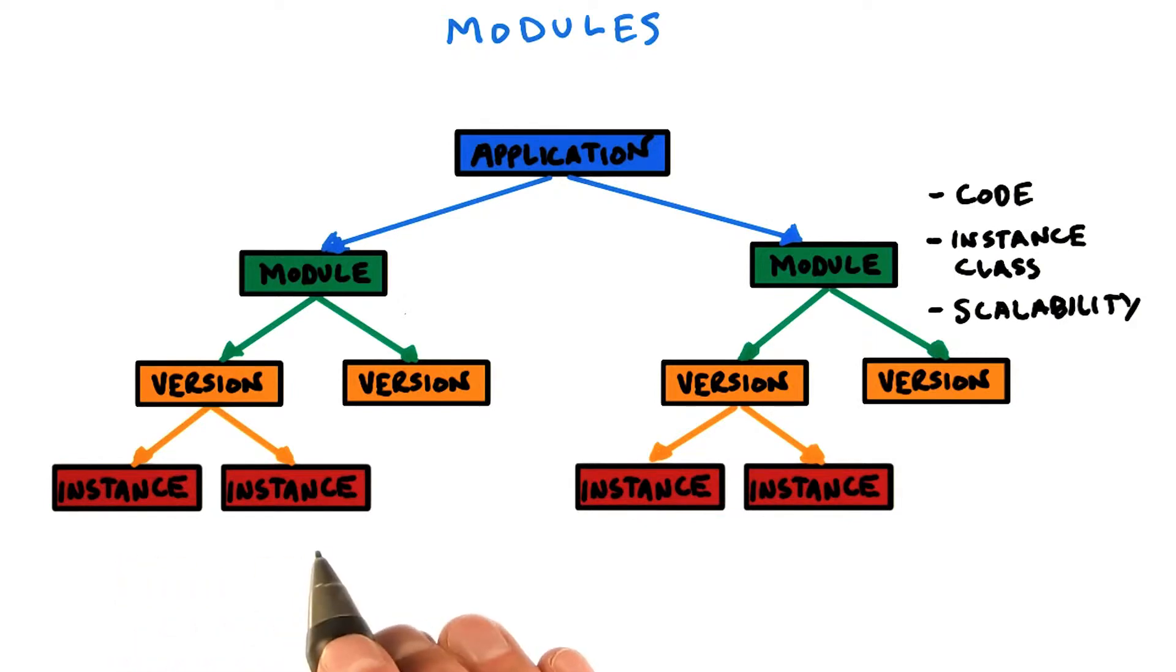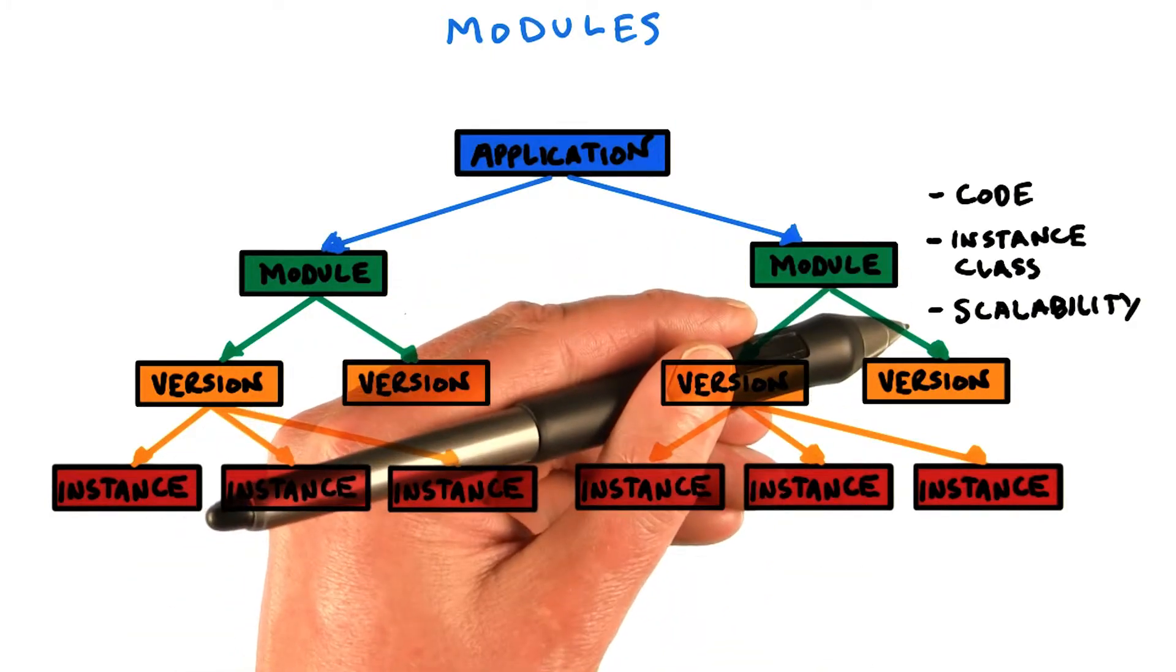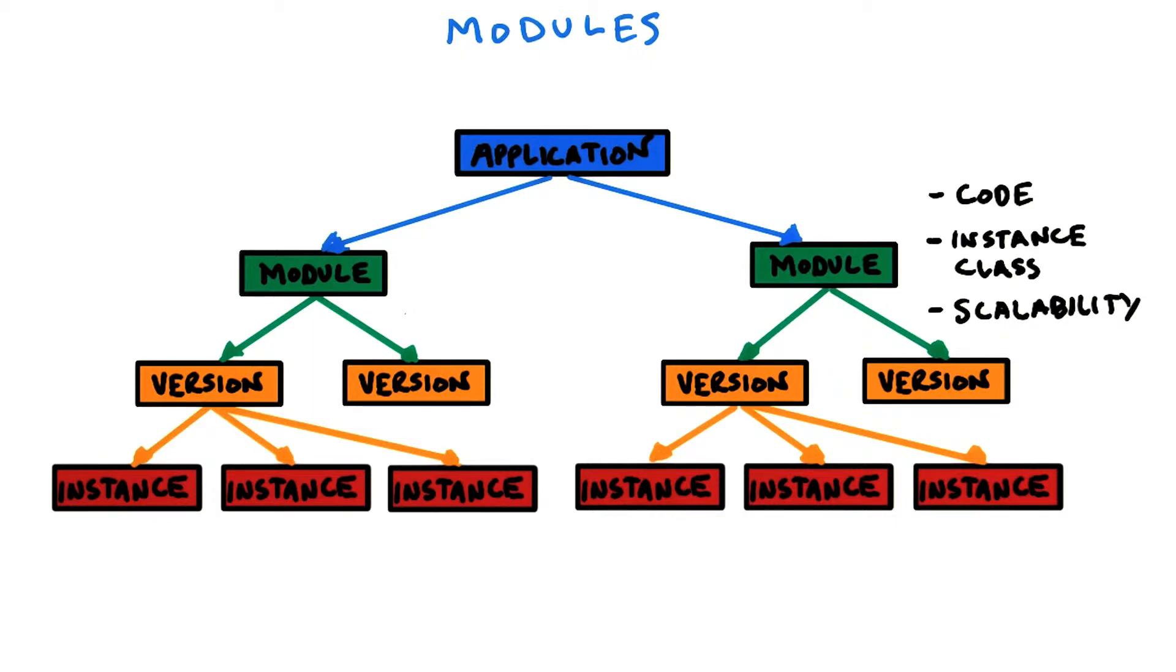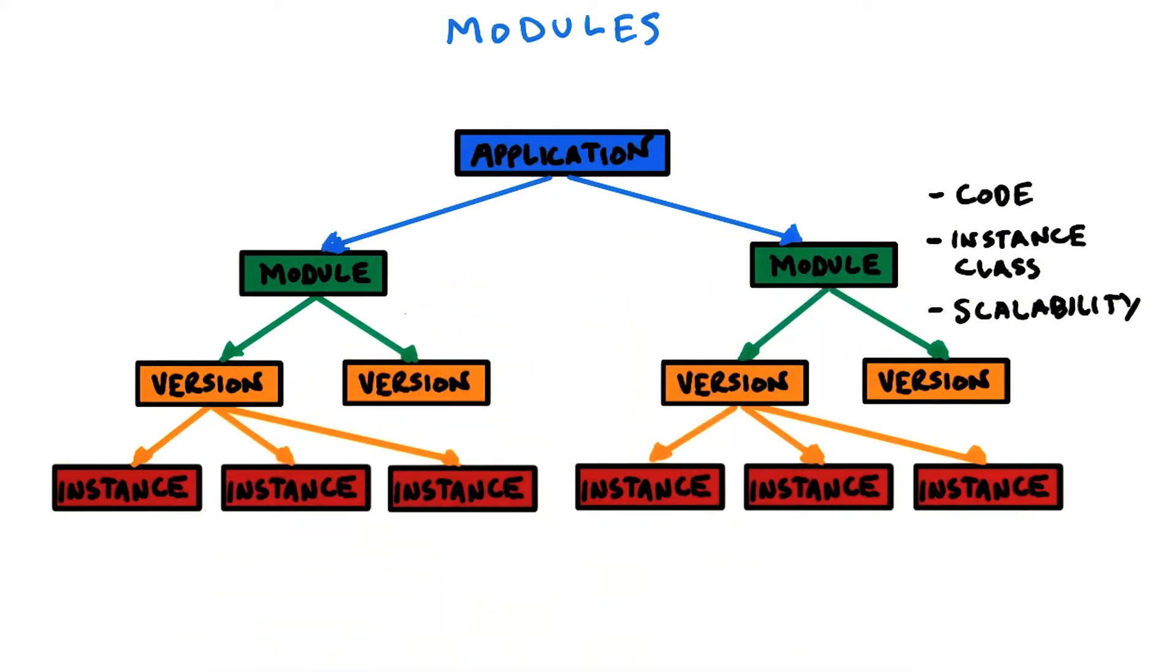And finally, there are instances. An instance is what actually executes the application code. And if you want to scale your application, App Engine can fire up more instances to manage the additional load. Since the instance class and the number of instances define the performance and scalability of a module, the capacity of your application depends on the instance class and the number of instances you run. This is configured on the module level. And that is exactly what we will look at now, how to configure a module.